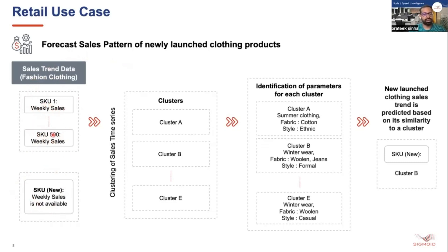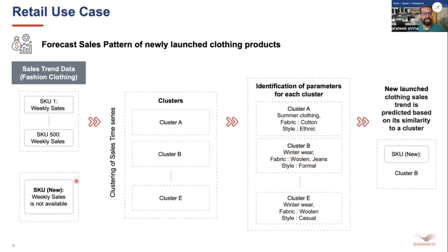So how do we estimate? First we take the sales trends of historical products, cluster them into some clusters using time series clustering, and then try to identify some parameters for those clusters. For example, cluster A is about products of summer clothing — fabric cotton, style ethnic. Once those parameters are identified, we also identify similar parameters for the new item, match it with the cluster, and use the sales trends of that cluster to estimate the sales trends of the new product.